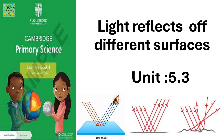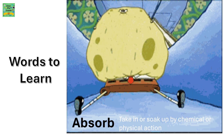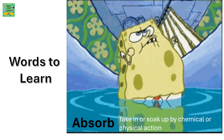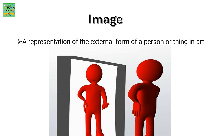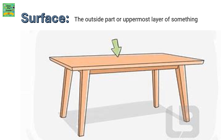Light reflects off different surfaces — Unit 5.3. Words to learn: absorb means to take in or soak up by chemical or physical action. Image is a representation of the external form of a person or thing in art. Reflection is the process where the incident ray that falls on a surface is reflected back; it is known as the reflected ray, and this process is known as reflection. Surface is the outside part or uppermost layer of something.